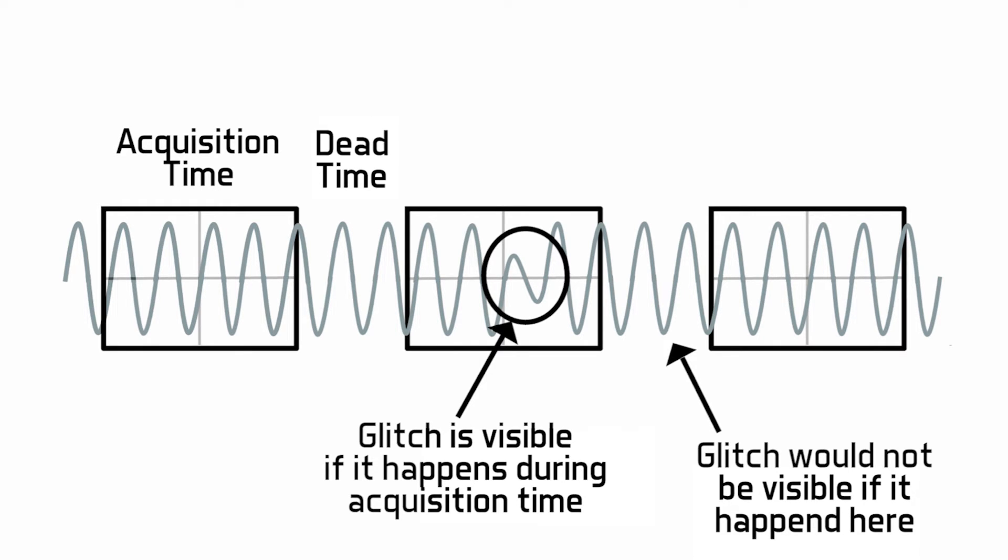The dead time is the amount of time that elapses when the scope processes the waveform it has just acquired. During that dead time, it will miss any signal activity. The more often a scope updates waveforms for a given observation time, the higher the probability of capturing and viewing an elusive event. Sounds like the faster the waveform update rate, the more likely you are to capture glitches.